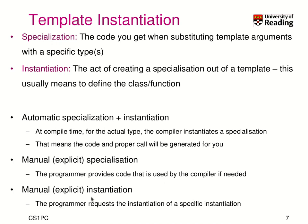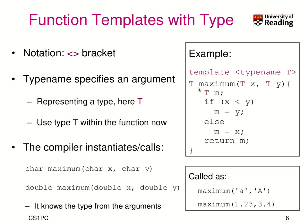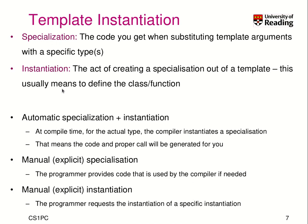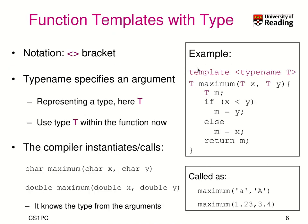There is a set of terminology we should understand. 'Specialization' is the code you get when you substitute the template arguments with a specific type. In our example, one specialization is where T was char, and another specialization is when T is replaced with double. 'Instantiation' is the act of creating a specialization out of a template — this means to define the class or function by replacing the template arguments with the appropriate type. This code then exists as if you had manually defined functions like char maximum and double maximum.